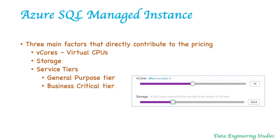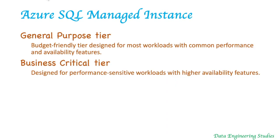Each service tier is designed for different levels of performance, hence the pricing varies for each tier. General Purpose tier is a business-friendly tier designed for workloads with common performance and availability features. Business Critical tier is designed for performance-sensitive workloads with high availability features.